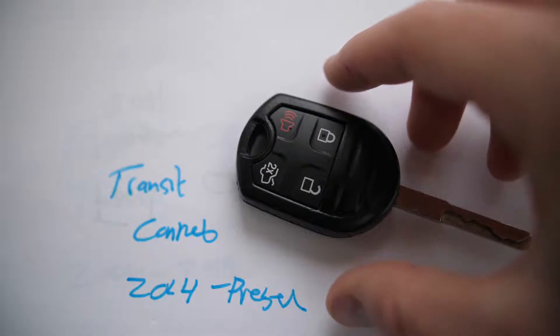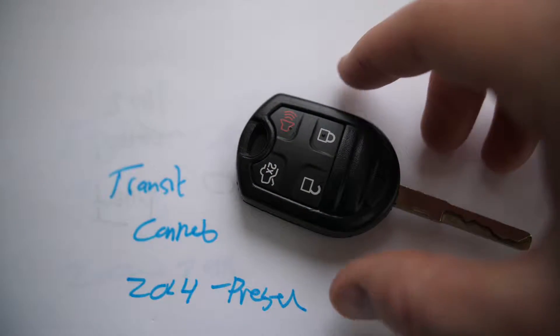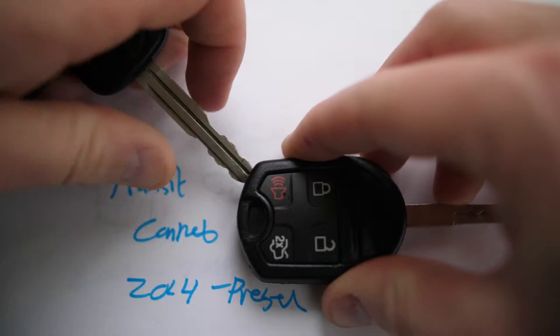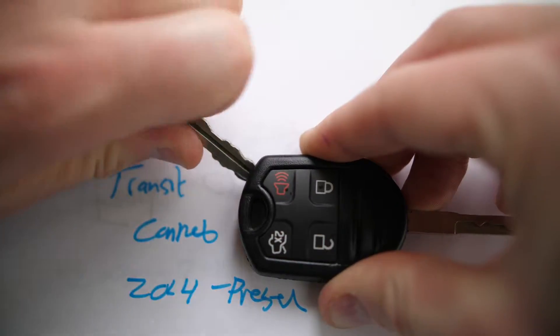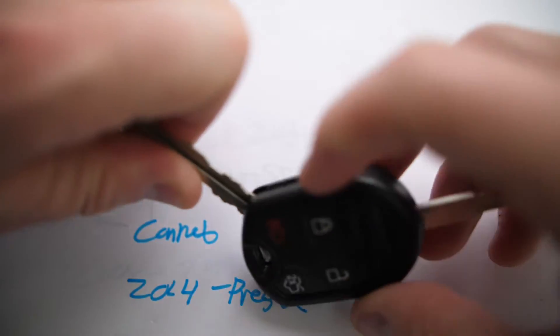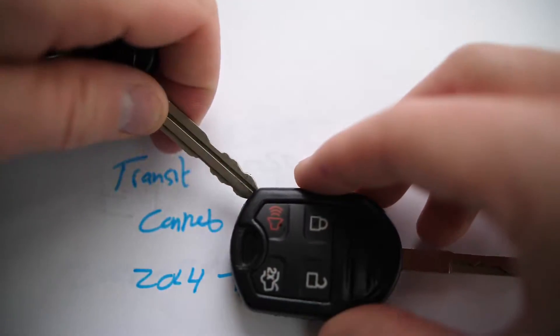If you take a small flathead screwdriver or even another key works well, get into that notch and then just kind of twist because you've got to start to pry apart these two pieces and get some separation between the two.